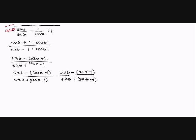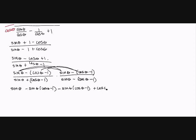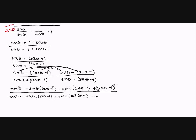I'm going to multiply the top and bottom by sine theta minus cosine theta minus 1. Not that you would ever naturally think of this, but it's a technique you can use for a problem this involved. When I multiply these two: this times this is sine squared theta, this times this is negative sine theta times cosine theta minus 1, this times this is minus sine theta times cosine theta minus 1, and this times this is plus cosine theta minus 1 quantity squared. The denominator is similar.